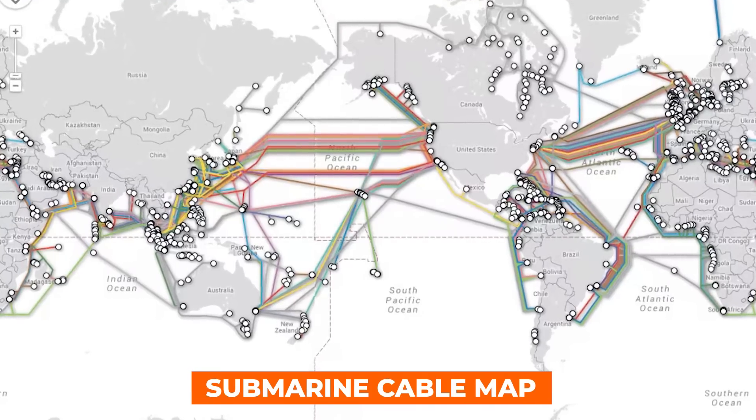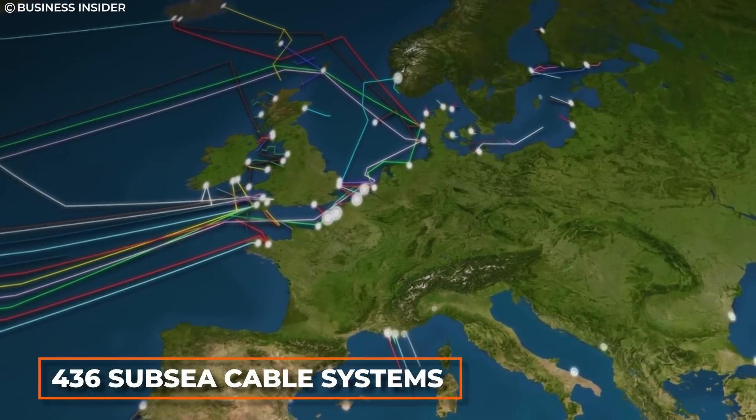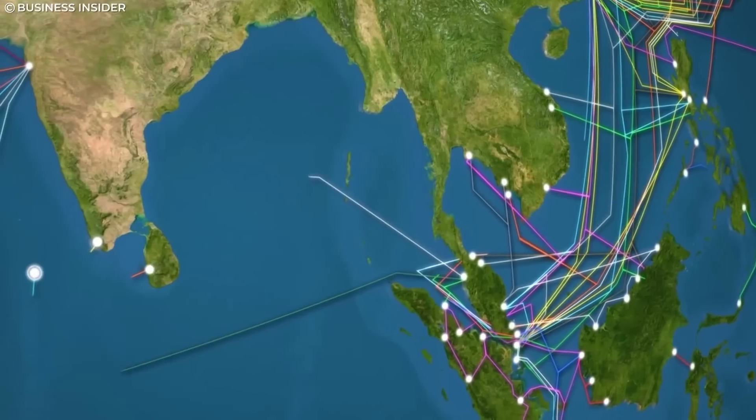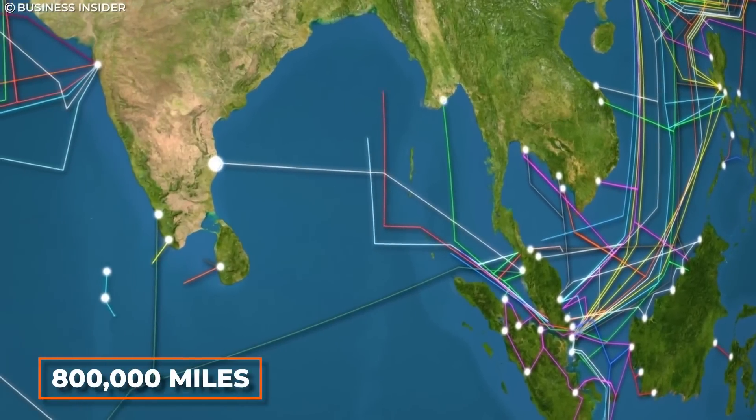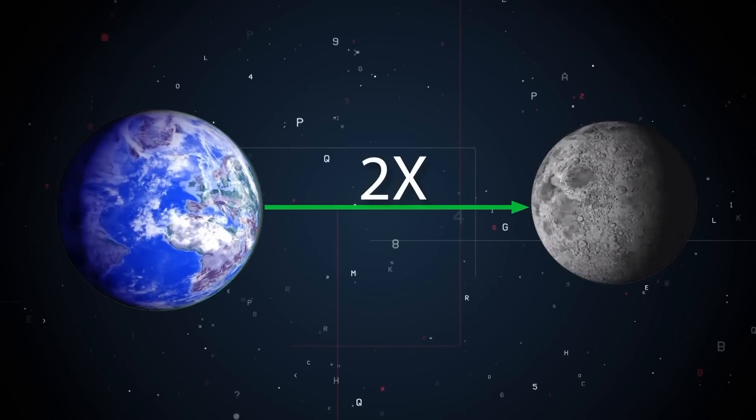According to the Submarine Cable Map of the World, as of 2021, over 436 subsea cable systems have been laid, crisscrossing all the major oceans and seas. Combined, that's over 800,000 miles of undersea cables operational today, twice the distance between our Earth and the Moon.